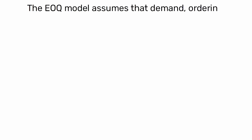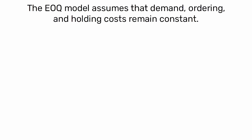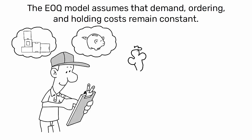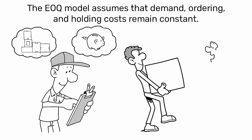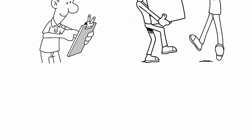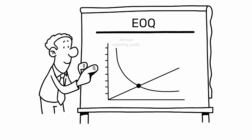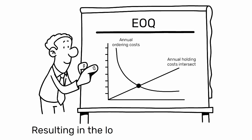The EOQ model assumes that demand, ordering, and holding costs remain constant. The model aims to determine the most cost-effective quantity to order that minimizes total inventory costs while satisfying customer demand. The EOQ is the point where annual ordering costs and annual holding costs intersect, resulting in the lowest possible total cost.